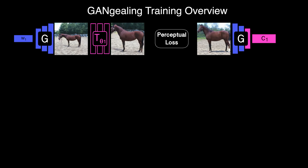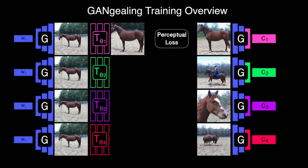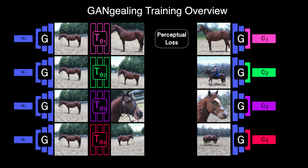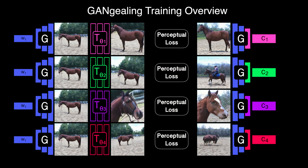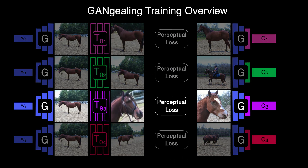Some especially diverse datasets just can't be well aligned to a single template — you need more than one template. A simple extension to our method is to learn more than one target mode and more than one spatial transformer, each of which will specialize in transforming images to its assigned mode. During training, we render each fake image with each of our learned modes and query each spatial transformer with the same fake input. To encourage specialization, we only optimize the minimum of the resulting perceptual losses, assigning fake images to the mode which best represents them.